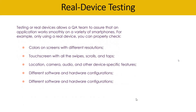Real device testing allows the QA team to ensure that an application works smoothly on a variety of smartphones. Only using a real device can you properly check colors on screen with different resolutions, touchscreen interactions including swipes, scrolls, and taps, and also location, camera, audio, and other device-specific features. You also need to investigate different software and hardware configurations, which must be performed on real-time devices.